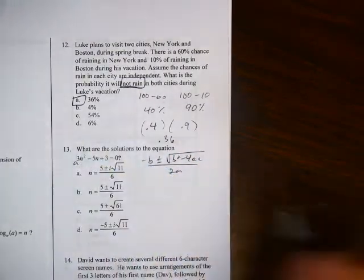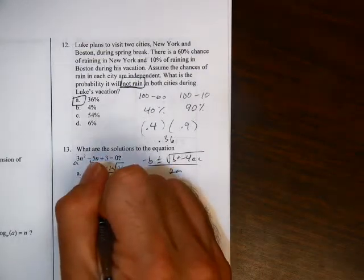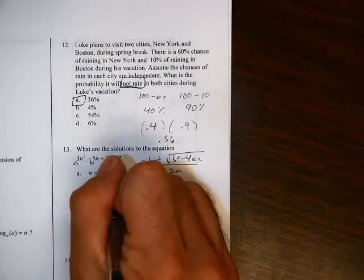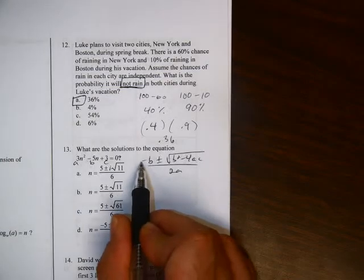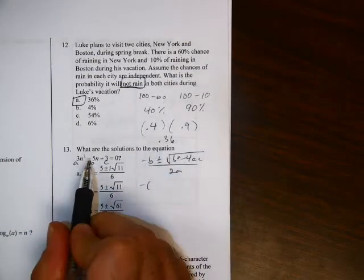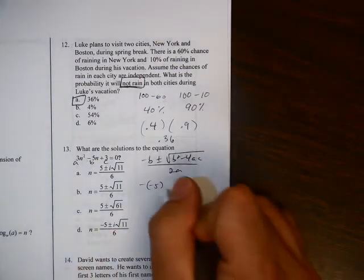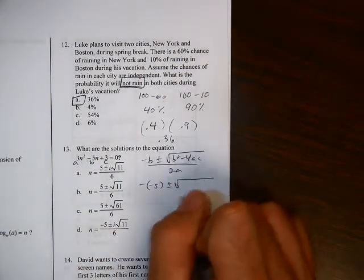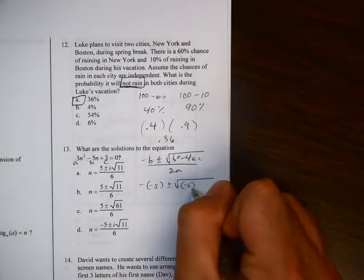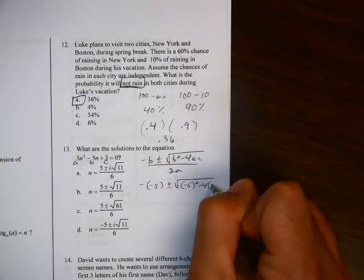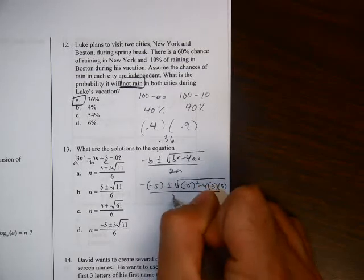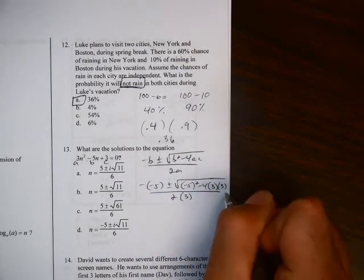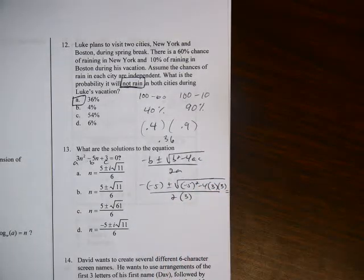Our a value is 3, our b value is negative 5, and our c value is also 3. So we start plugging in the b value, negative b, negative and then negative, which will eventually cancel each other out, plus or minus b squared, negative 5 squared, minus 4 times a, which is 3, c, which is 3, all over 2 times a, which again is 3. So there it is all plugged in.